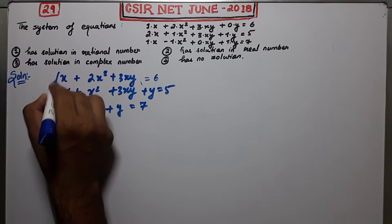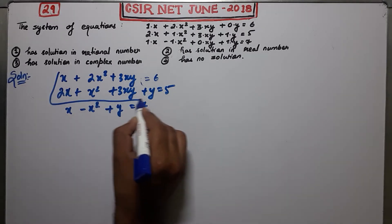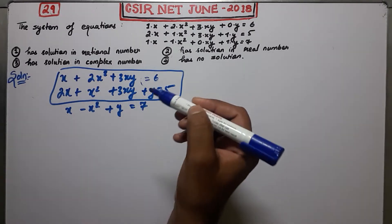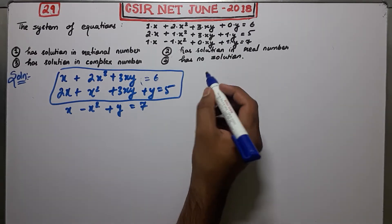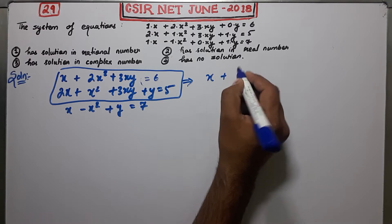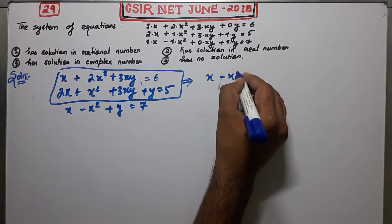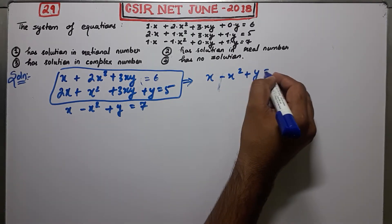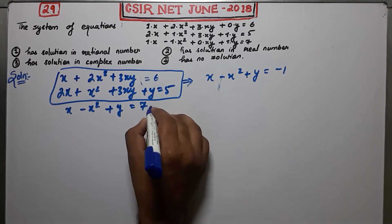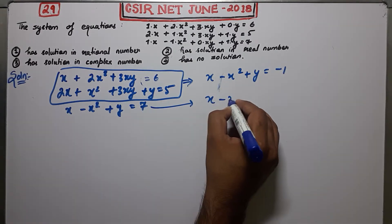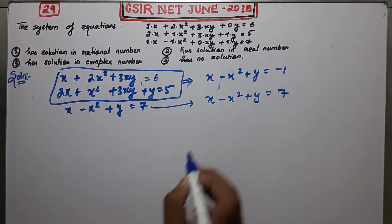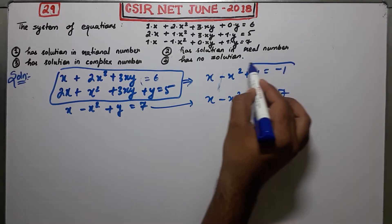Now I will subtract the first equation from the second. By subtracting first from second, you get: x minus x squared plus y equals minus 1. Now the third equation says that x minus x squared plus y equals 7.